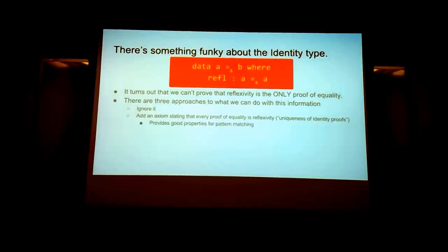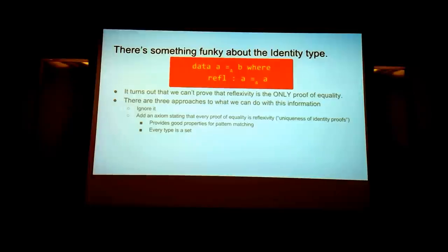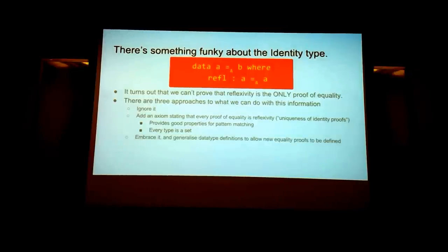The second approach is to state flat out by an axiom that every proof of equality is reflexivity — so every constructor of equality is reflexivity. It provides good properties for pattern matching, and every type is also a set as before. But we don't have to do that.